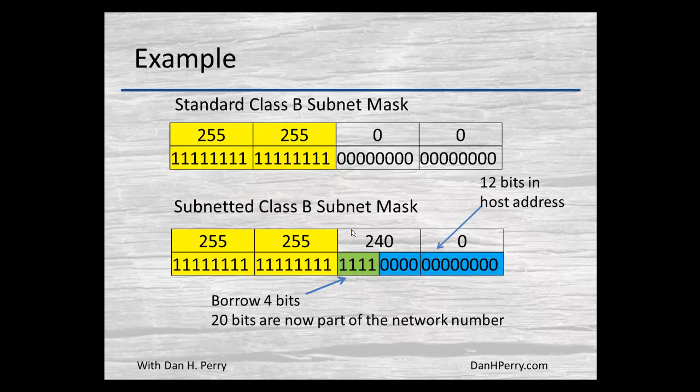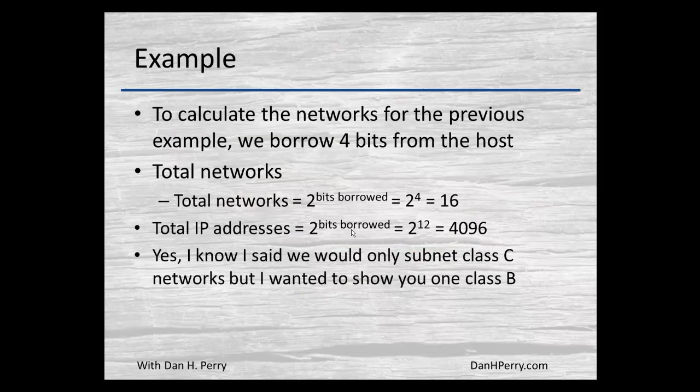We borrowed 4 bits to make 20 bits part of the network and left 12 bits as the host. By borrowing those 4 bits, we now have the ability to do the calculations since we know how many bits we've borrowed and how many bits are part of the host. The total number of networks is 2 raised to the number of bits borrowed — so that's 2 to the 4th, or 16 networks.